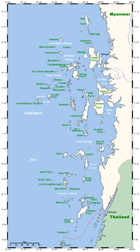Continental fragments correspond to land masses that have separated from a continental mass due to tectonic displacement. The Farallon Islands off the coast of California are an example.